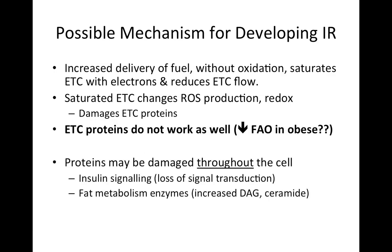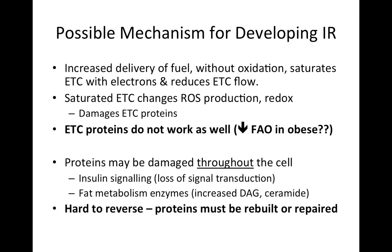If we can extend these findings to the cell, which is very likely because the redox state and free radicals aren't contained within the mitochondria, then it may be that proteins throughout the cell are damaged as well. So insulin signaling proteins and fat metabolizing enzymes might be damaged in response to this imbalance of increased energy intake and decreased energy expenditure. Of note, this is hard to reverse — you have to completely rebuild the proteins because repair isn't as successful as we'd like it to be. That's why type 2 diabetics that have been diabetic for a long time may be less responsive to a certain intervention.